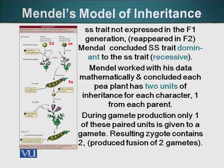However, it reappeared in the F2 generation. Mendel concluded that the spherical seed trait was dominant over the wrinkled seed trait because the spherical seed trait had masked the effect of the wrinkled seed trait.